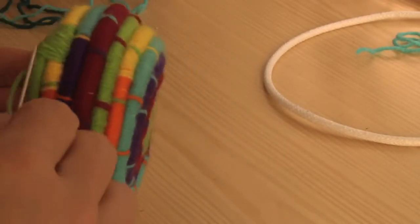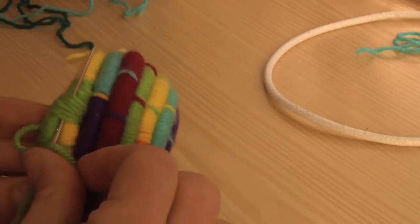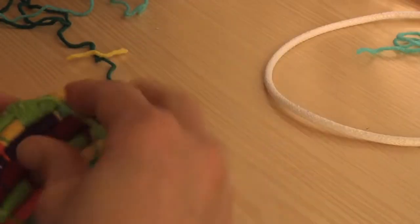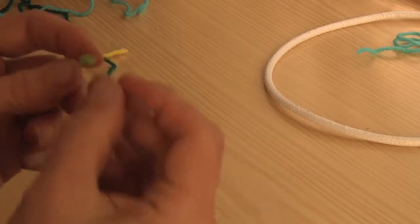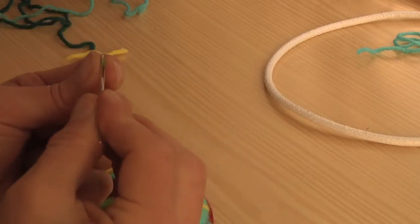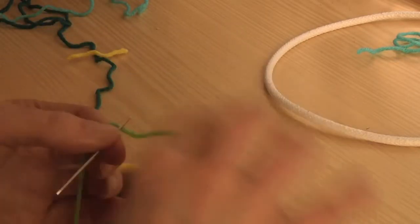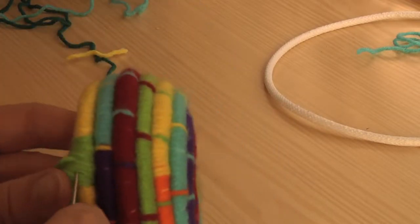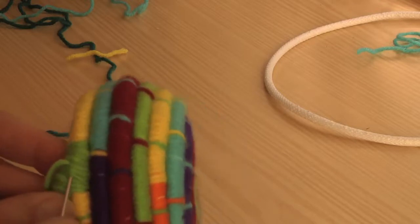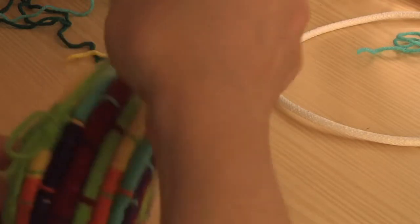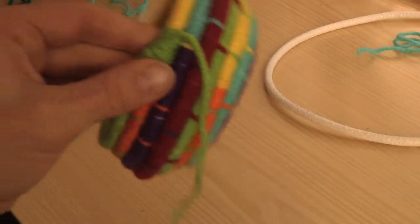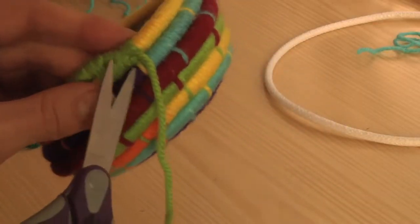And then what we do instead of tying a knot is I'm going to put the needle through there. Bring the extra yarn through. I'm going to thread it one more time. And I'm going to kind of go back a little bit but then through again. And this just secures it but without tying a knot. And then I can just cut the end.